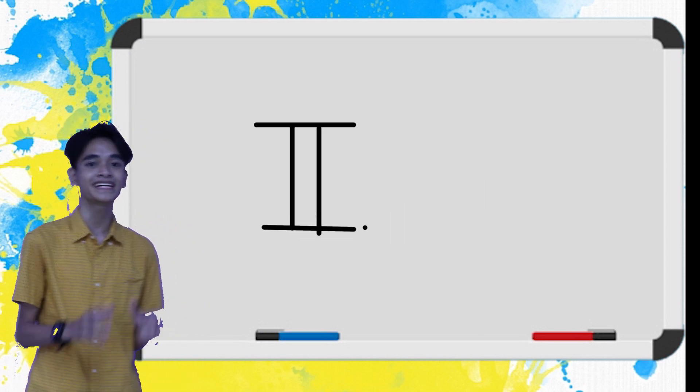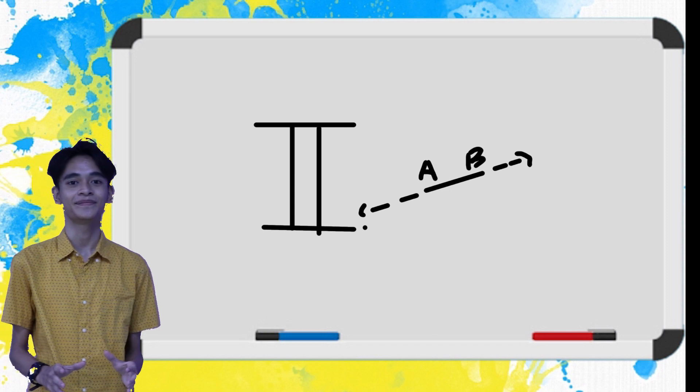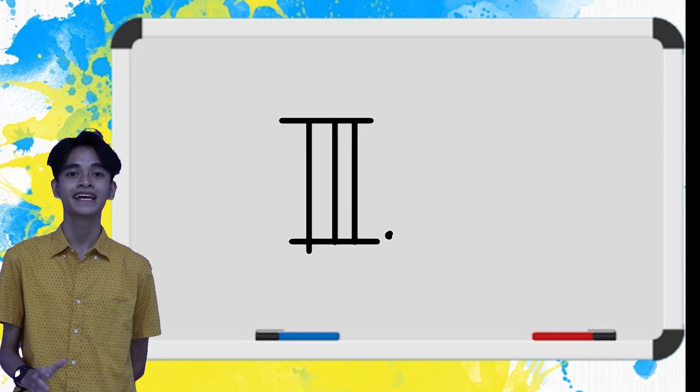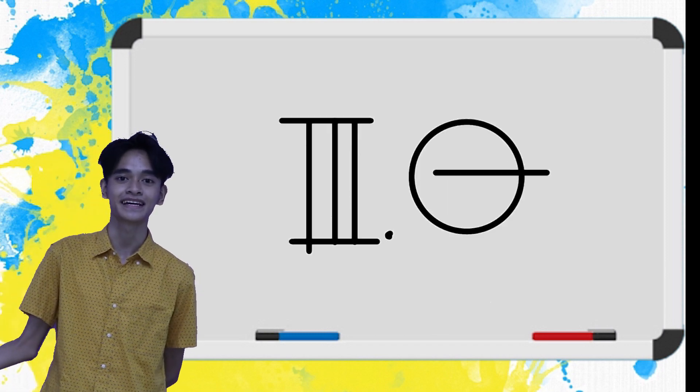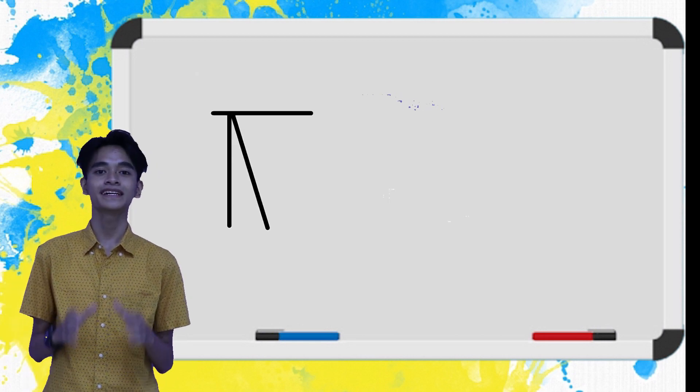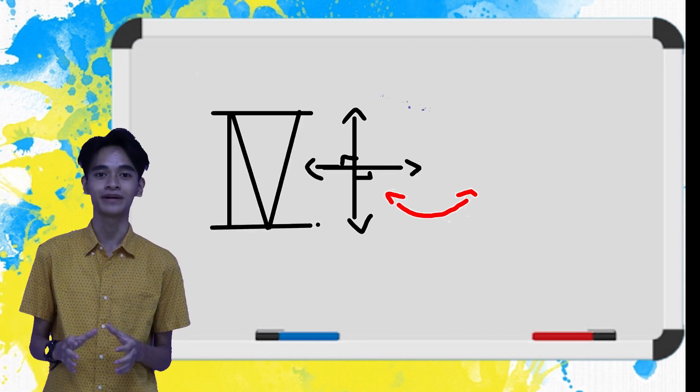Second is to construct a finite straight line continuously. Third is a circle with any radius and center.